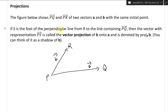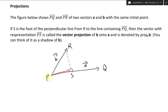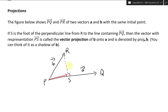If S is the foot of the perpendicular line from R to the line PQ, then you draw a perpendicular line down to S. The vector with representation PS is called the vector projection of B onto A, and it's denoted by proj subscript A of B. You can think of it as the shadow of B onto this arrow right here.